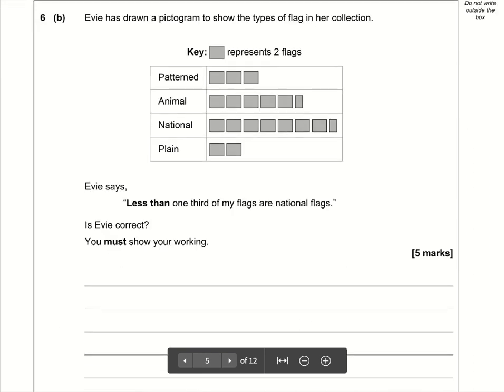Part B. What we need to do here is look at the key. This square represents two flags. So for patterned we've got 2, 4, 6. For animal we've got 2, 4, 6, 8, 10 and this is a half of 2 which is 1, so 2, 4, 6, 8, 10, 11.